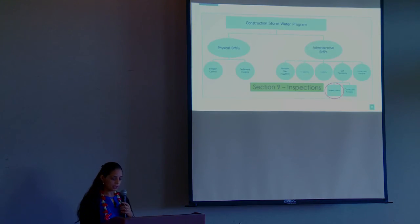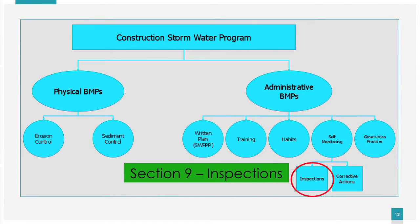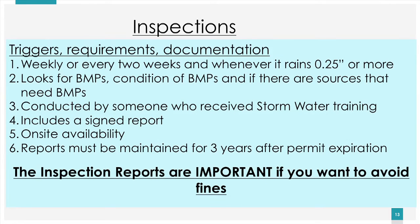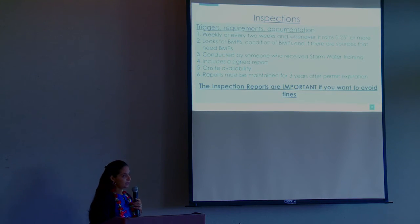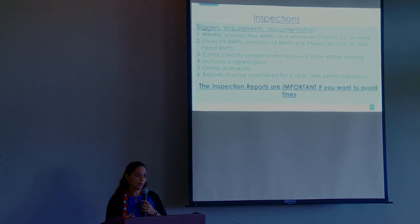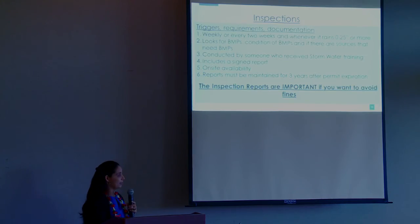Section 9 covers inspections. Self-inspections are done to ensure you are implementing your SWPPP and that your BMPs are effective. This is the part where the key change in the new Appendix C occurred. DOH has given you the opportunity to decide which inspection schedule you want: you can either do inspections every seven calendar days, or every 14 calendar days and within a representative storm event. A representative storm event for us is 0.25 inches or more. If you choose the 14-day option, since rainfall is a trigger, you're required to either maintain a rain gauge on site or use rainfall data from a nearby weather station — and it has to be representative of your project location.